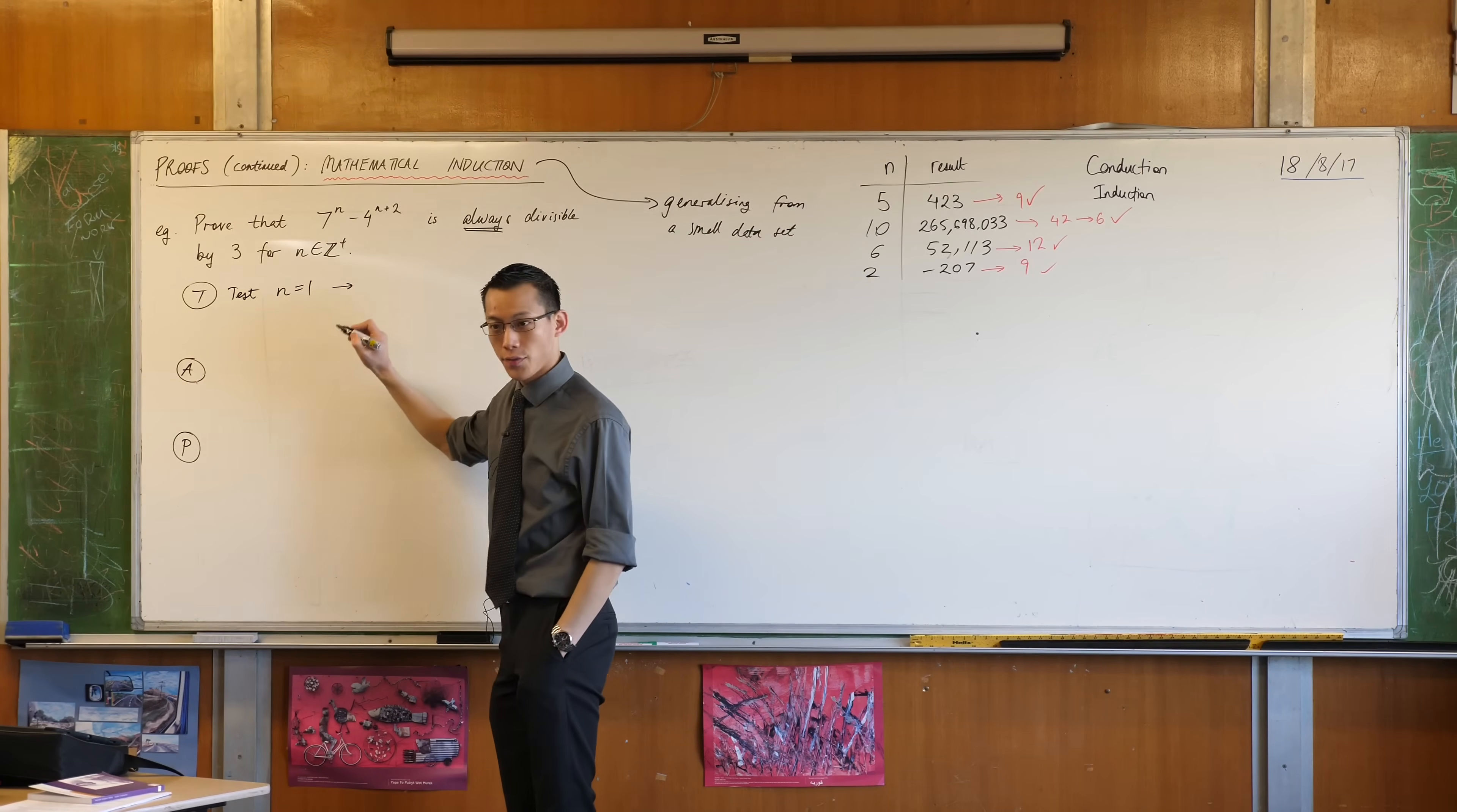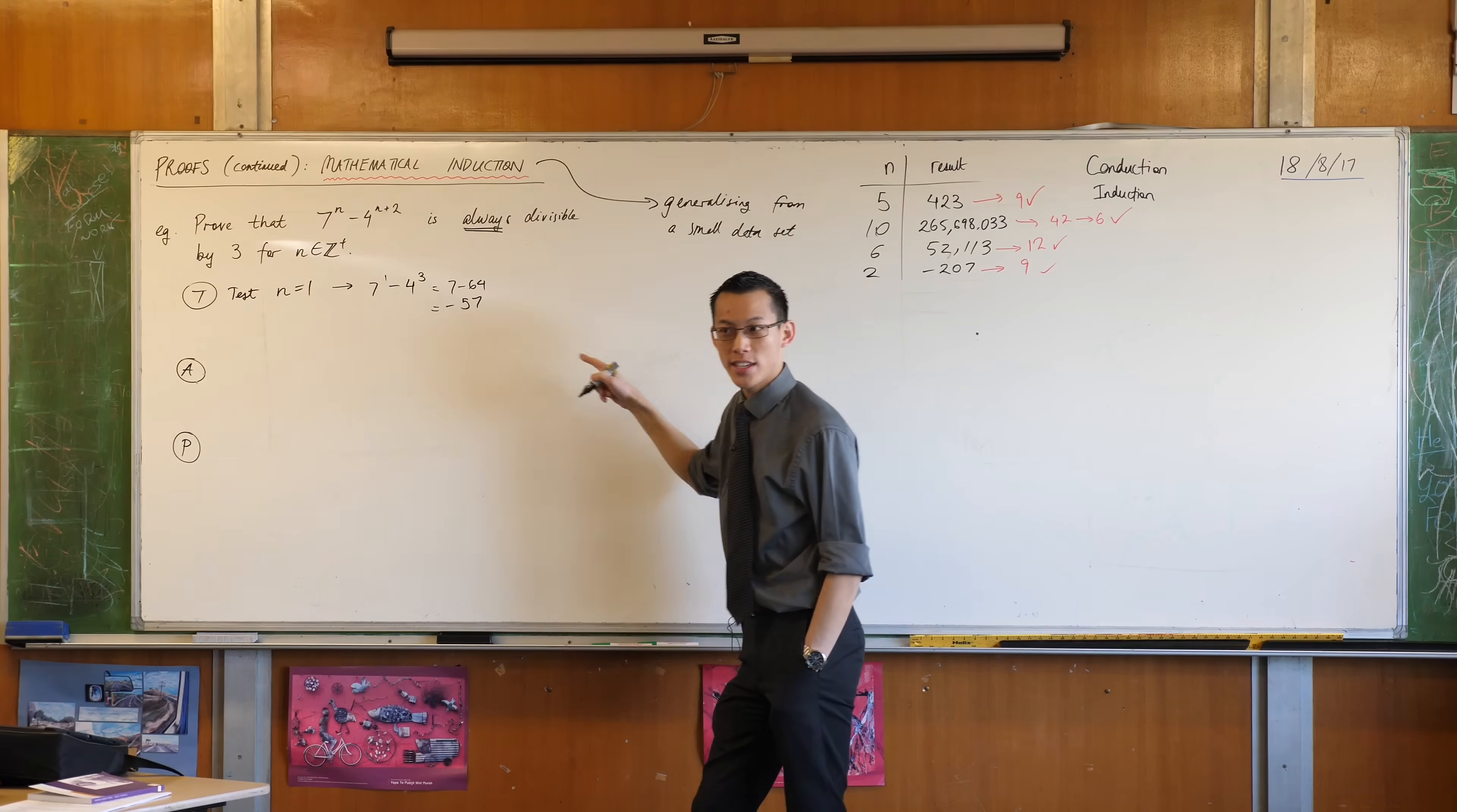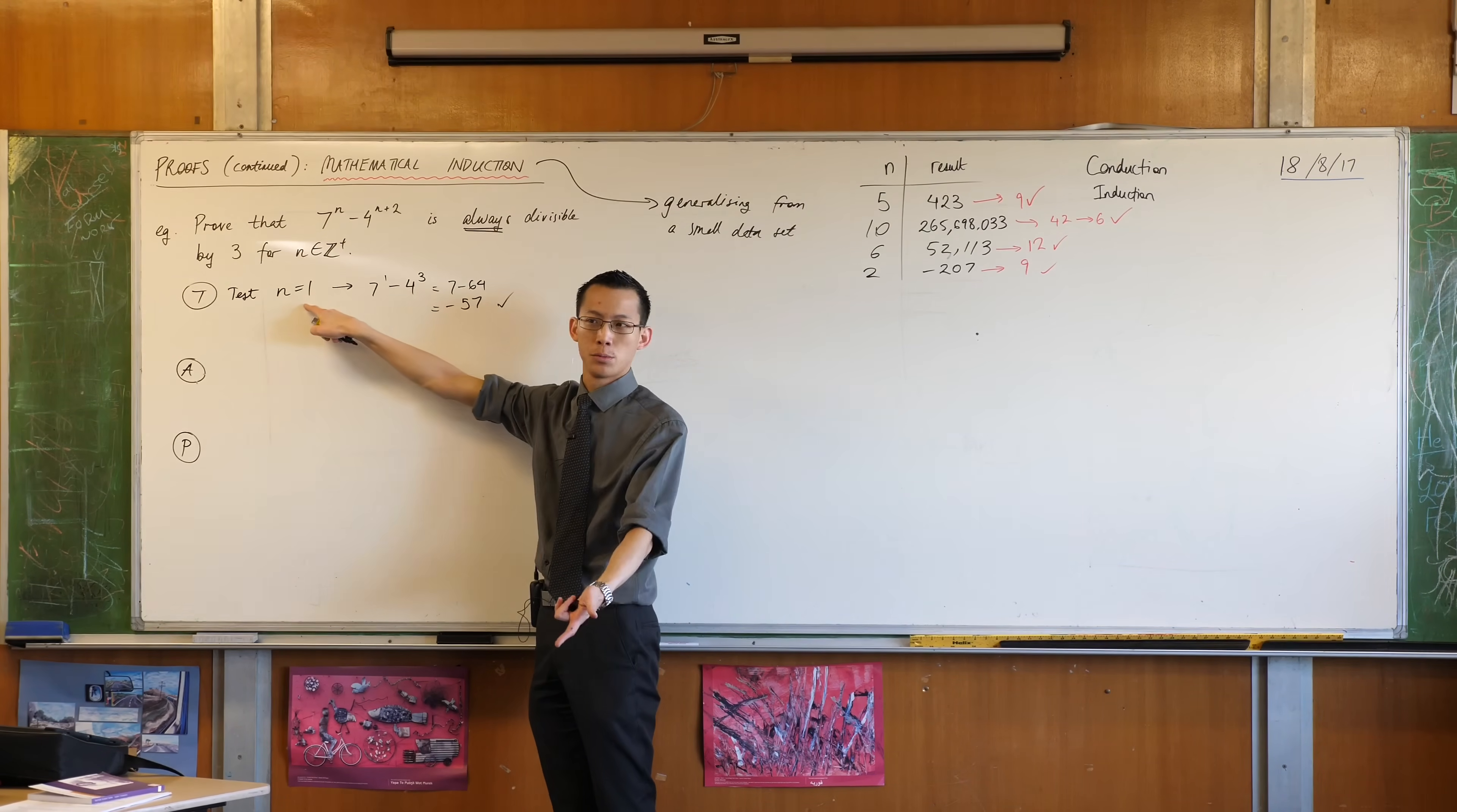So we can all do this together. Let's have a look at this thing. If I test for n equals one, I'm going to get 7^1 - 4^3. Do you agree? So that's seven take away sixty-four, that's negative fifty-seven, I think, which is divisible by three. It's a bit weird - divisibility, we usually only think about it in terms of positive numbers, but this checks out. 57 itself is divisible by three, so I'm happy with that. Okay, so therefore I now know that this statement is true for the first possible value.